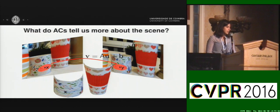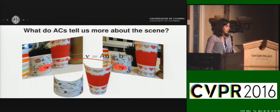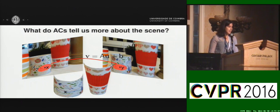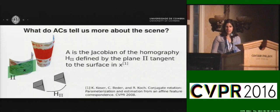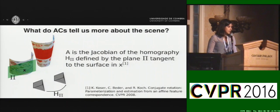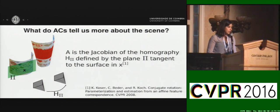Besides giving the matching of regions across frames, what do ACs tell us more about the scene? Consider an AC consisting of an affine mapping A and the point correspondence XY. It was shown that A is the Jacobian of the homography induced by the plane pi, which is tangent to the surface in the point of correspondence.